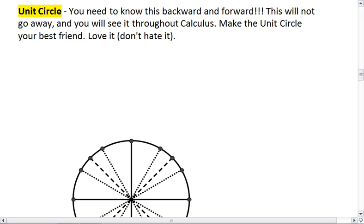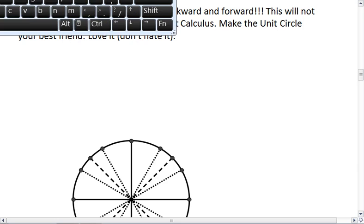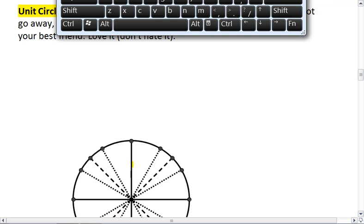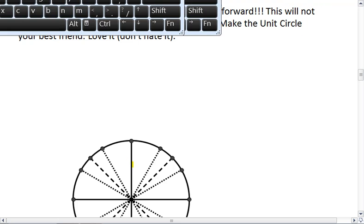The last topic I want to talk about for this chunk of videos for sine and cosine is the unit circle. So you have the basics of sine down, you have the basics of cosine down. The unit circle is something that you have got to know backwards and forwards. You need to make this your absolute best friend because it will not go away. So let's take a look at this.